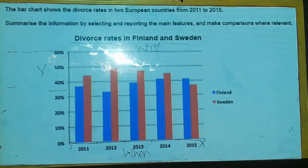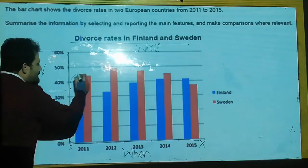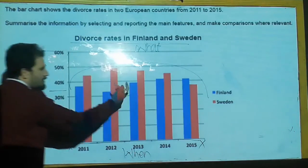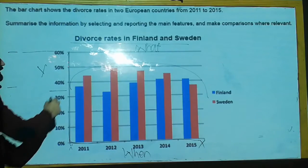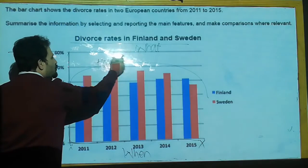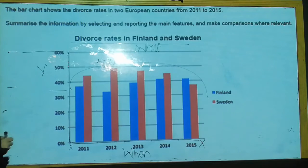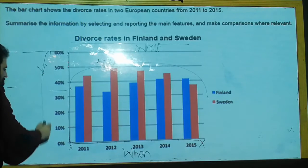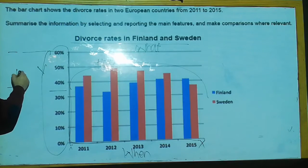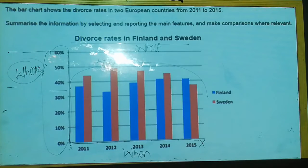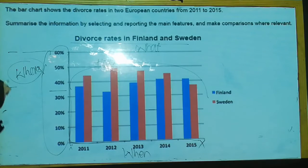I can say: when. And the changes over here — whatever sort of changes are happening — I can say how. How changes are happening here. And where the change is, and how many changes are happening. So these are the four points where you're explaining your supporting overview paragraph.